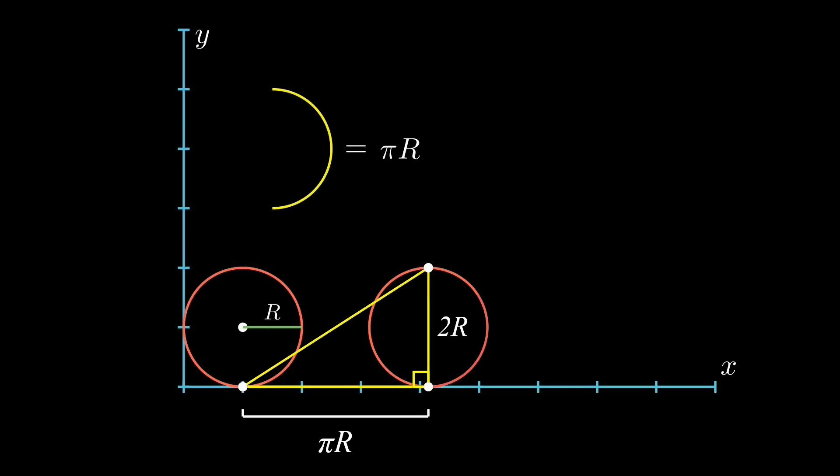By the Pythagorean theorem, the displacement is the square root of the sum of the squares of the horizontal and vertical distances. After solving, we get the required length as R√(4 + π²).